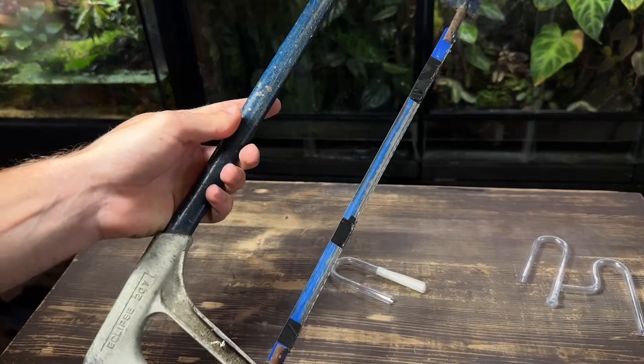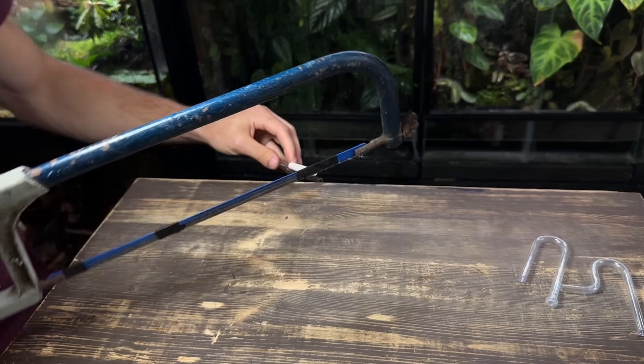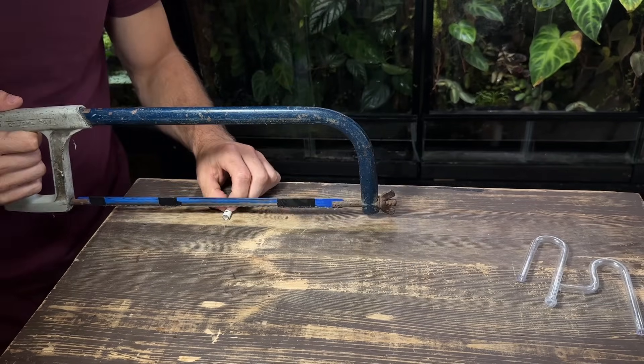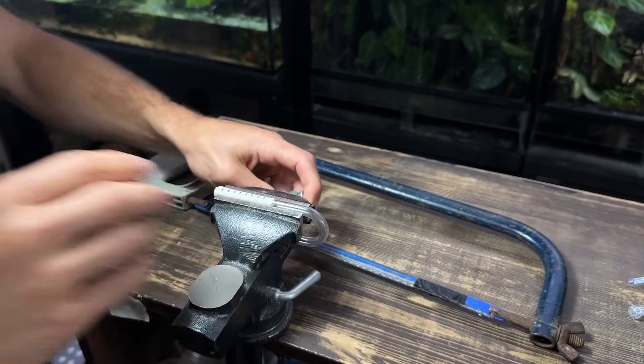This is extremely DIY but I've attached two hacksaw blades to this saw to make the slots slightly thicker than they would be with just one blade. You can cut them freehand but I like to use a vice to make the slots a bit more consistent.